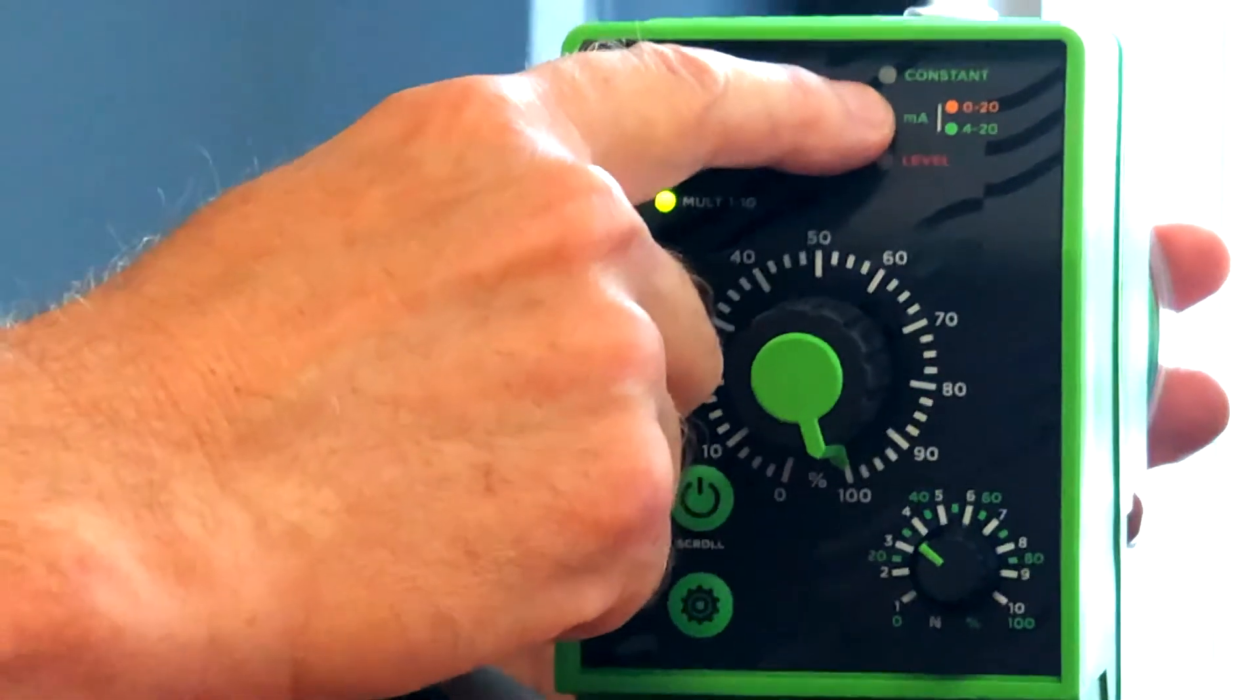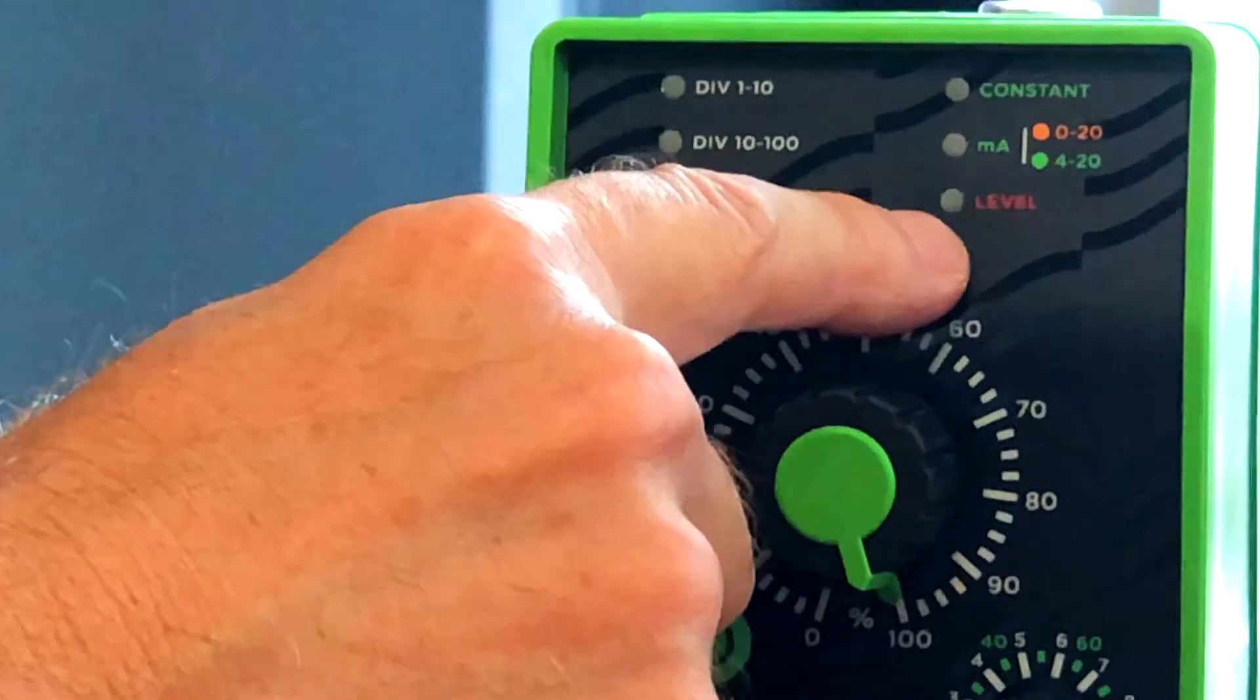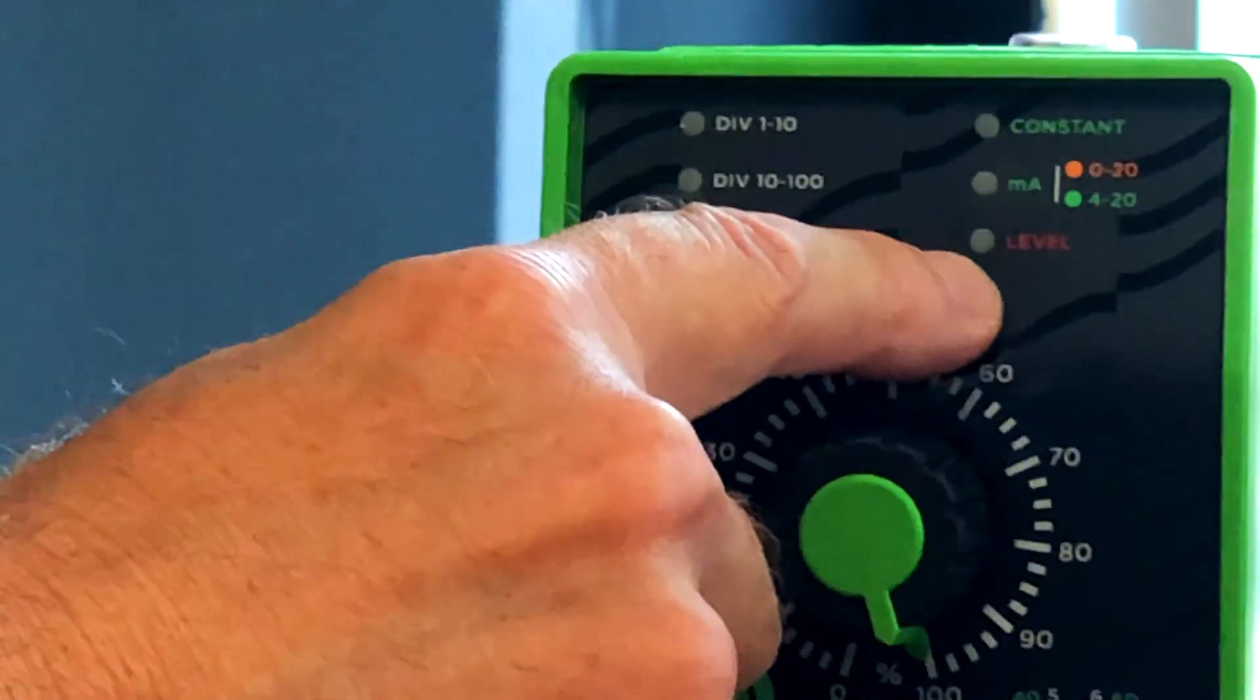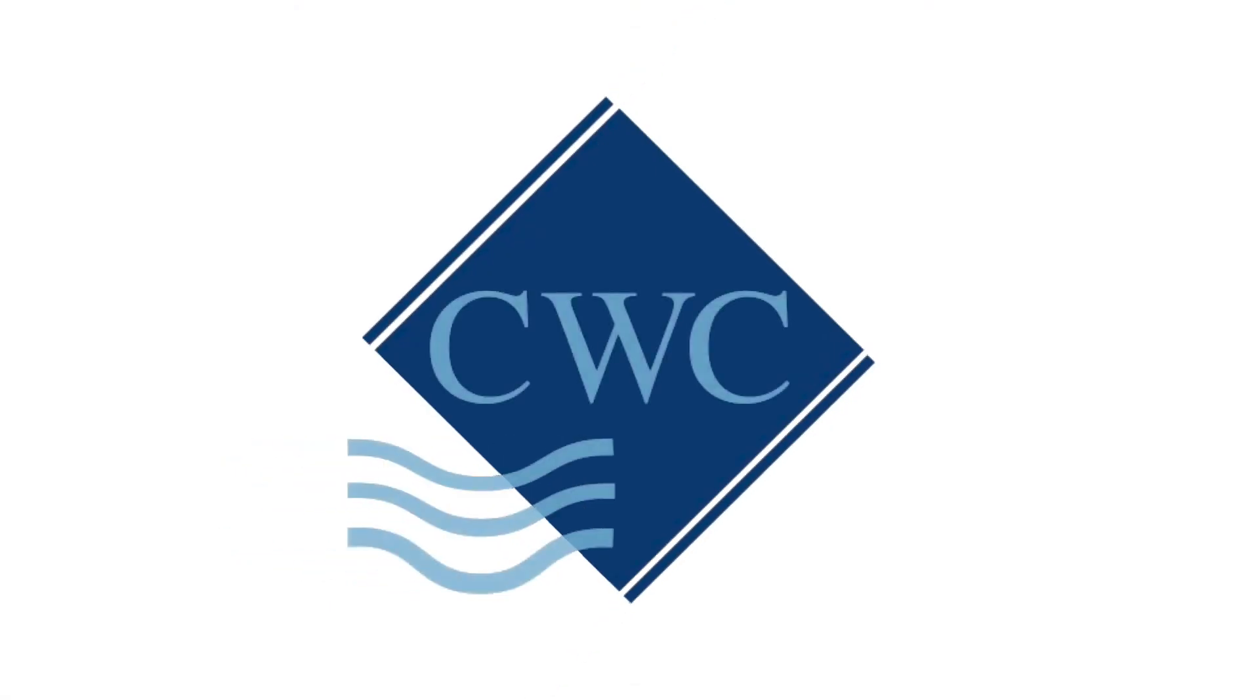And of course, in constant mode. One more LED indication on the pump is level, which is a red light, which comes up if the chemical drum runs out of chemical and the float on the foot valve drops down.